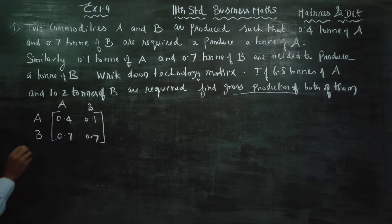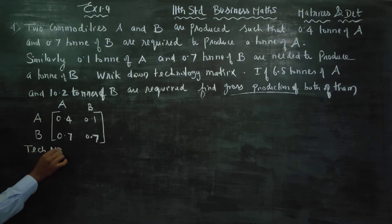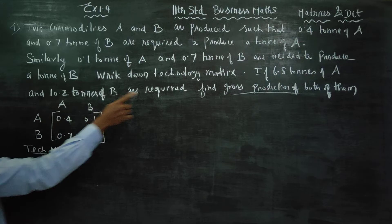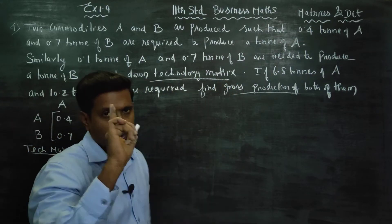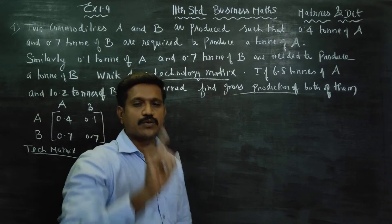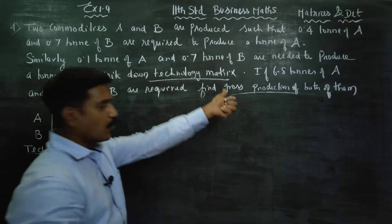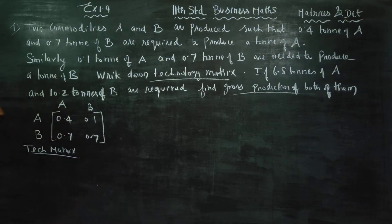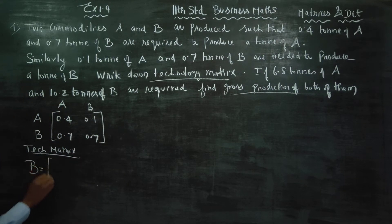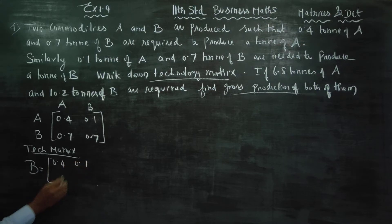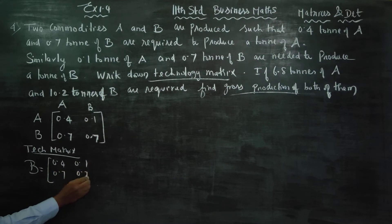This matrix is the technology matrix. The first question asks for the technology matrix. The technology matrix represents one unit of output. B is equal to: 0.4, 0.1, 0.7, 0.7.